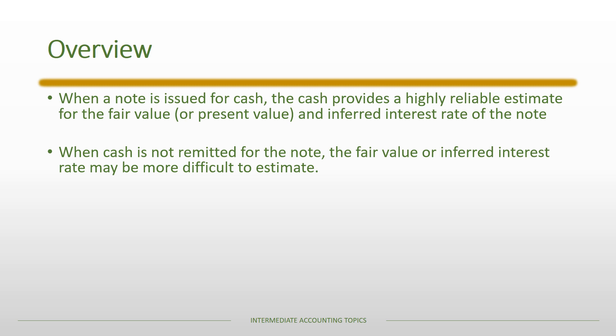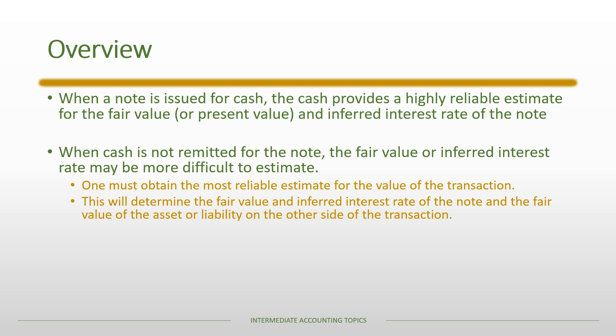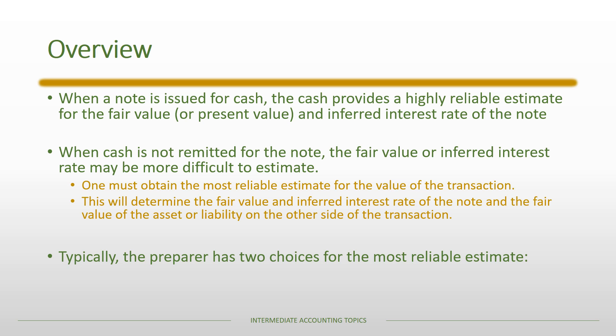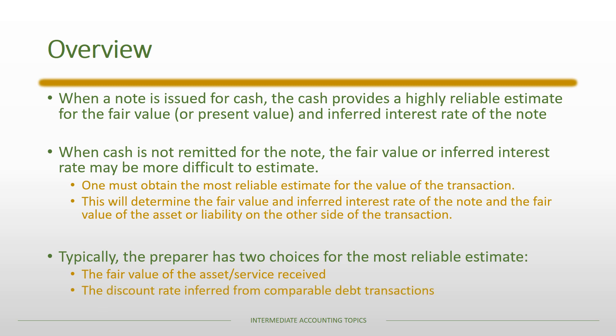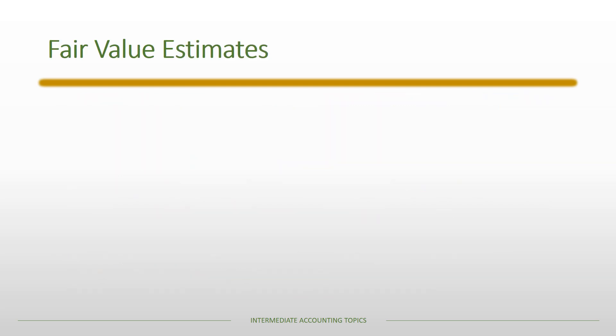However, when cash is not remitted for the note — in other words, when there's some other item that's part of the transaction — the fair value or inferred interest rate may be more difficult to estimate. You first have to obtain the most reliable estimate for the fair value of the transaction. Whatever you decide is the most reliable estimate will determine the fair value and inferred interest rate of the note, and also the fair value of the asset or liability on the other side. Typically a preparer has two choices: the fair value of the asset or service received, or the discount rate inferred from a comparable debt transaction.